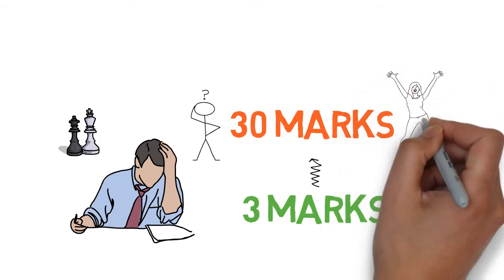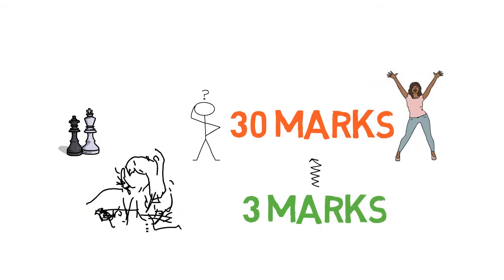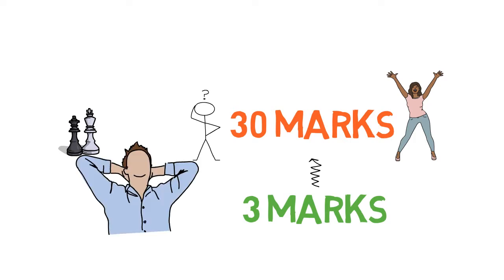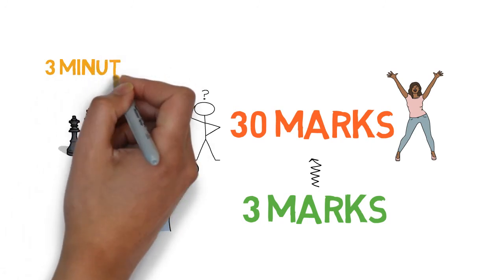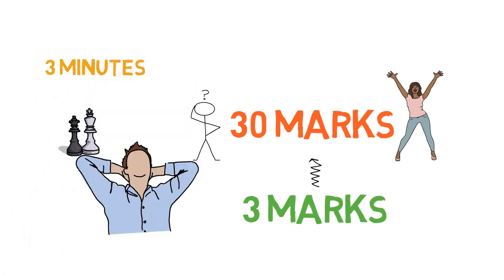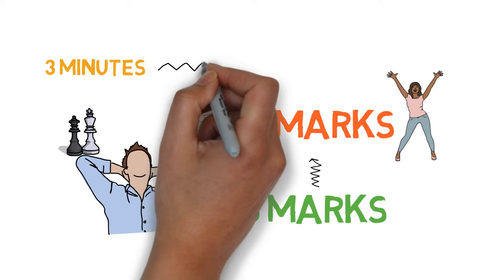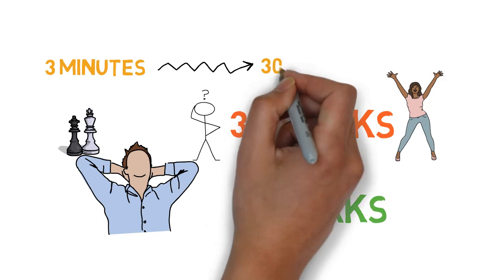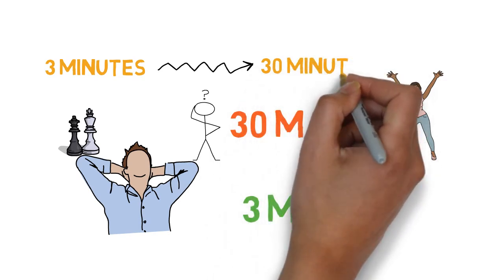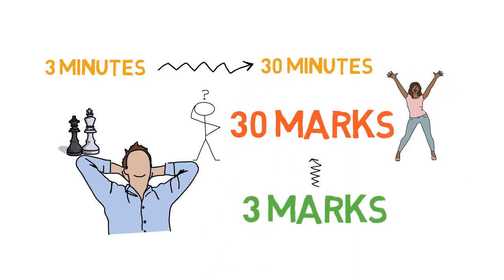This removes the fear of passing and you are under less stress and pressure while you answer the remaining questions. You need to allot maximum of 3 minutes for each question. The aim is to complete in 2 and a half minutes. Once 30 minutes are over, you should be completing all the 3 markers.